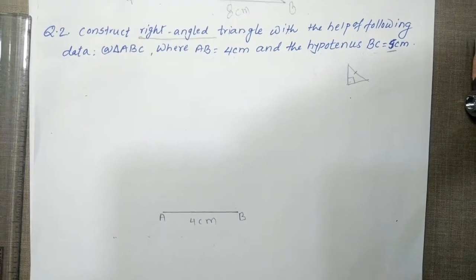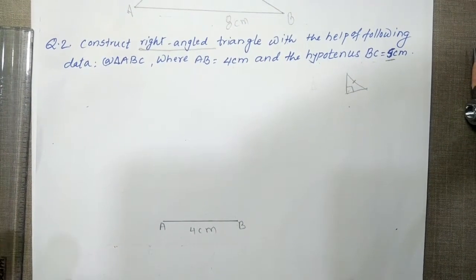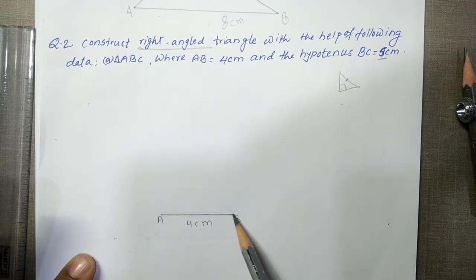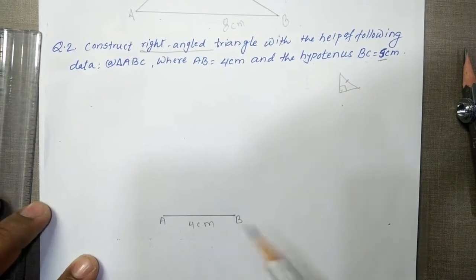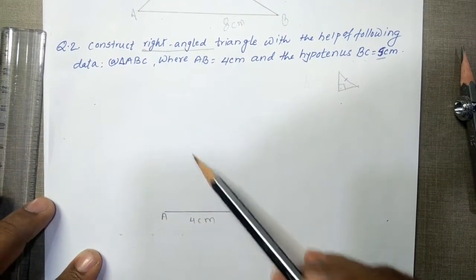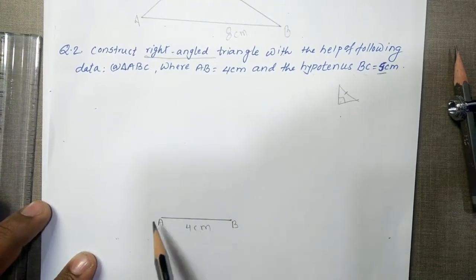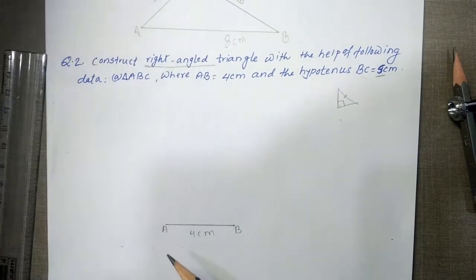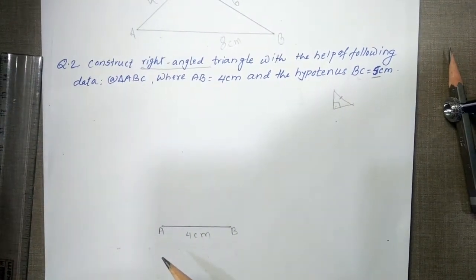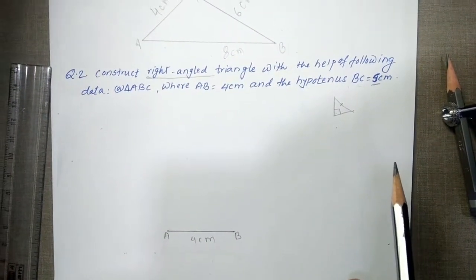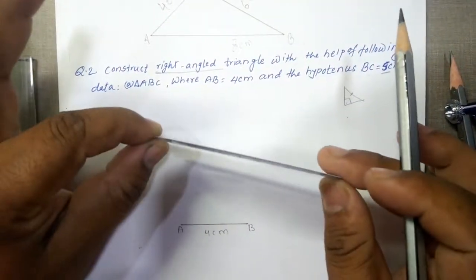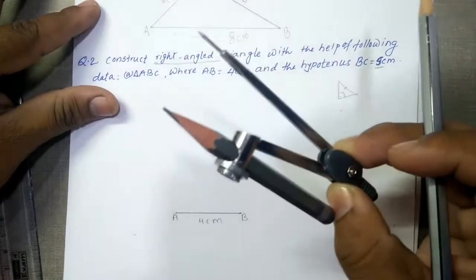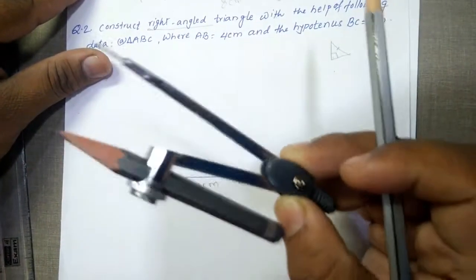Now what we need to do is draw the right angle here. The right angle will not be drawn at B, because from B to the third point C, BC is already given to us. So obviously the right angle will come at A. To draw the right angle, we have two options — we have a simple protractor, but we will not make use of this. We are going to make use of the compass, because we want to learn a little more. So we are supposed to use this compass.